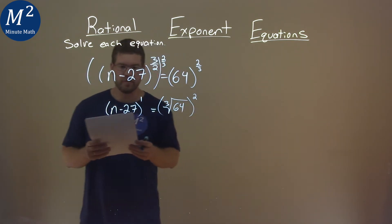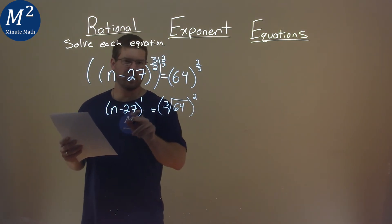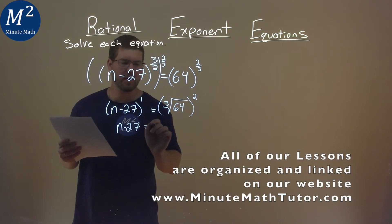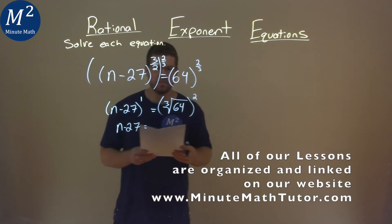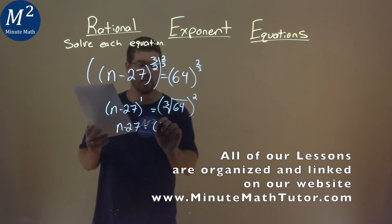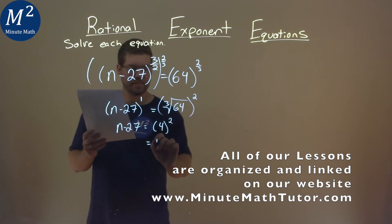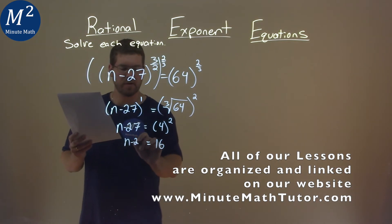So now we keep going and simplify. Well, n minus 27 to the first power is just n minus 27. The right-hand side, though, the third root of 64 is 4, and we still got a square. 4 squared is 16, and we have n minus 27.